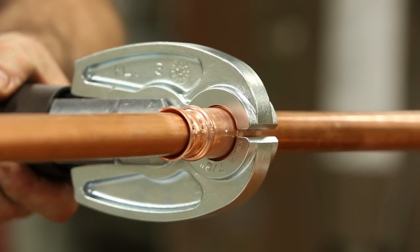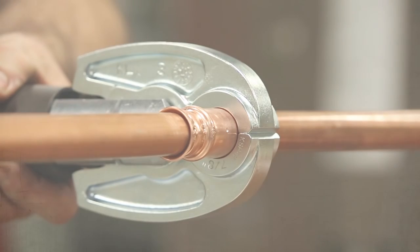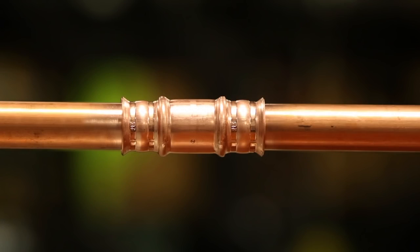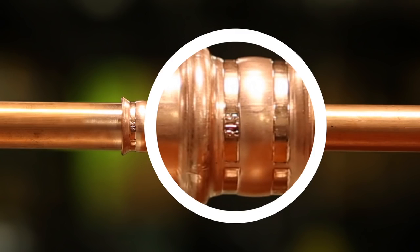Then press and hold the trigger on the tool until it completes its cycle. A special stamp displaying RLS will appear on the tube to show that the connection is right.